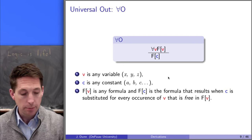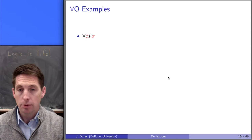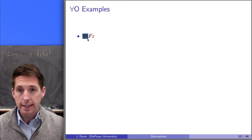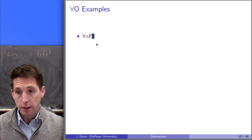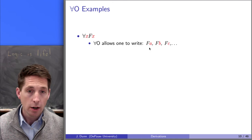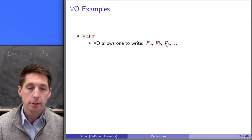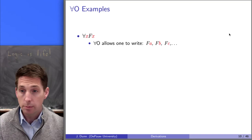Let's look at an example — I think that'll make it easier. Suppose we have a formula like universal x, F(x) in our derivation. What universal out says you can do is take away the universal quantifier and replace every instance of the variable bound by that quantifier with a constant. So F(a), F(b), and F(c) are all applications of universal out, because in each case we took off the universal quantifier and replaced x with a constant.